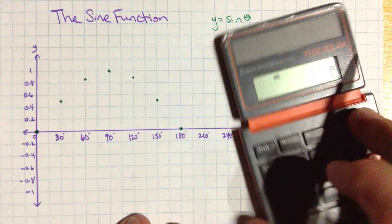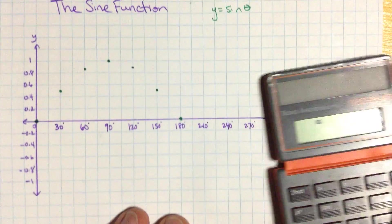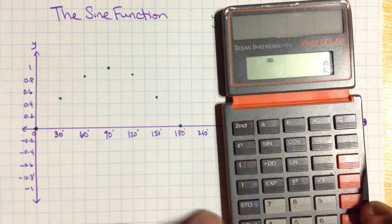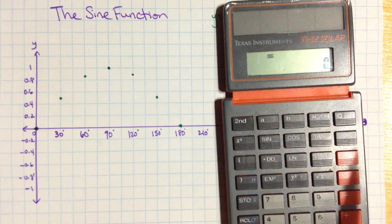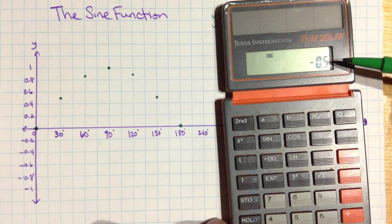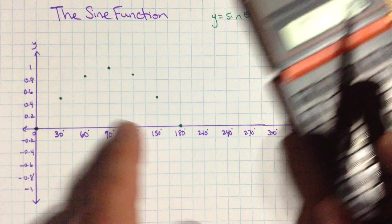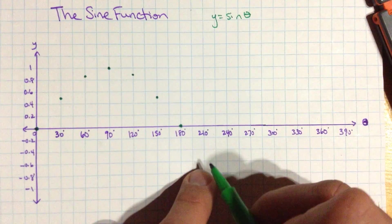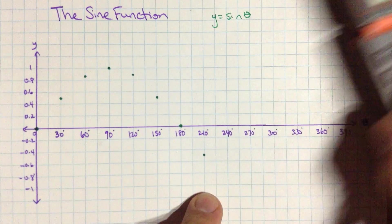And so let's see what happens when we continue. Let's go on to 210. Each of these is going up by 30 degrees here. So 210, if I press sine, I get negative 0.5. So I'm getting the same value, but a negative one right there.